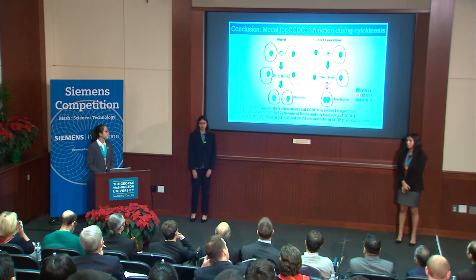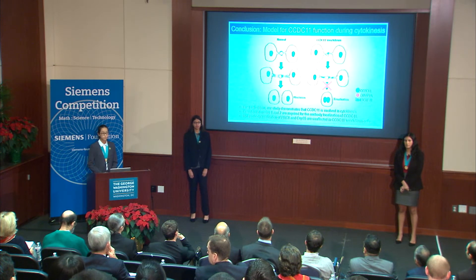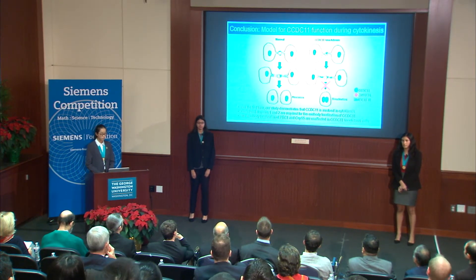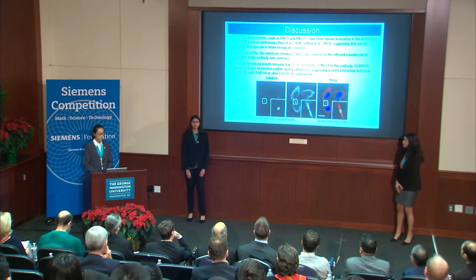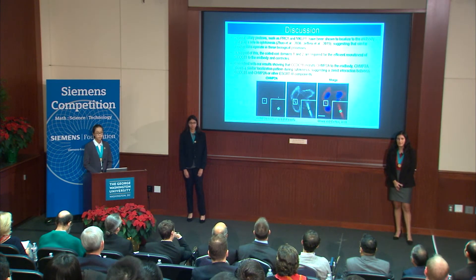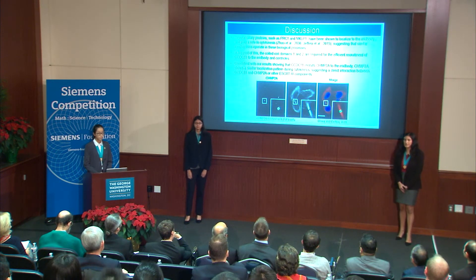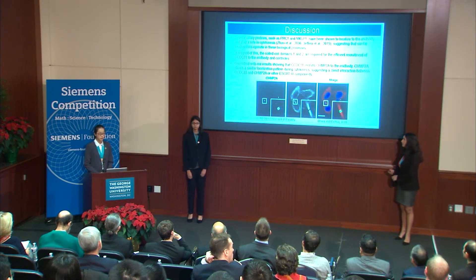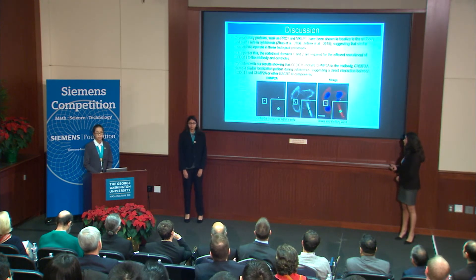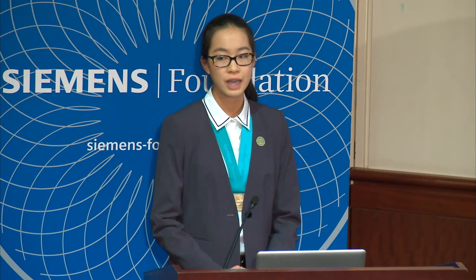Based on our results, we propose the following model. Our results indicated for the first time that CCDC11 plays a role in cytokinesis. Coiled-coil domains 1 and 2 are required for mid-body localization of CCDC11. Mechanistically, CCDC11 facilitates the recruitment of CHMP2A to the mid-body; when CCDC11 is depleted, recruitment of CHMP2A is also decreased, resulting in cytokinetic failure and binucleation. A few ciliary proteins have been shown to play roles in cytokinesis as well, suggesting a similar mechanism operating between the two processes, consistent with our observation that coiled-coil domains 1 and 2 are necessary for recruitment to both the mid-body and centrioles. It was previously demonstrated by Olmos and Carlton in 2015 that CHMP2A follows a similar localization pattern to that observed for CCDC11 in our study, suggesting CCDC11 could directly interact with CHMP2A or potentially other ESCRT-III components.